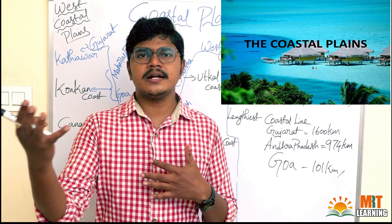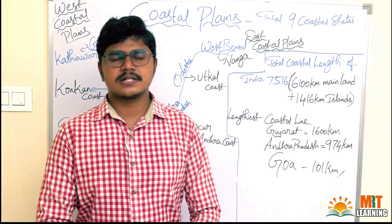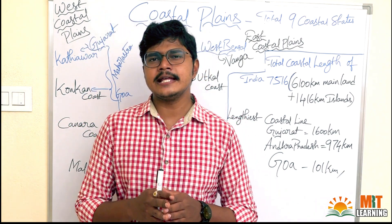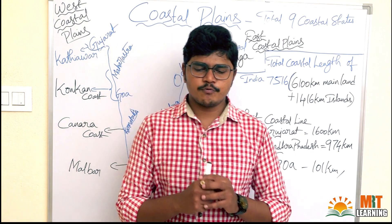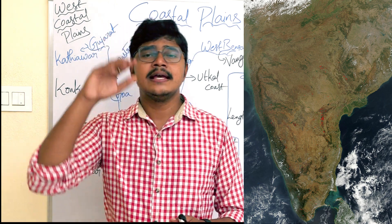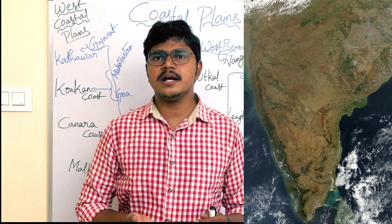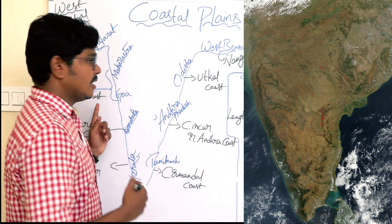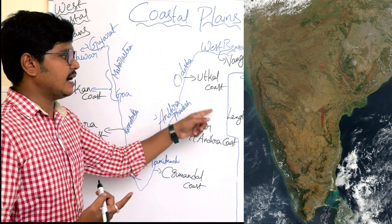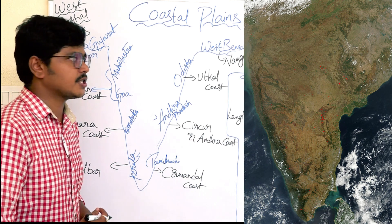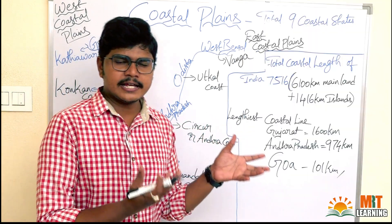So coastal plains means plains sharing boundary with the sea or near to the sea. India is a peninsular country because it shares boundary with water on three sides and land on one side. In north India we can see the Himalayas; in south India we can see water on three sides — Arabian Sea in the west, Bay of Bengal in the east, and Indian Ocean in the south.